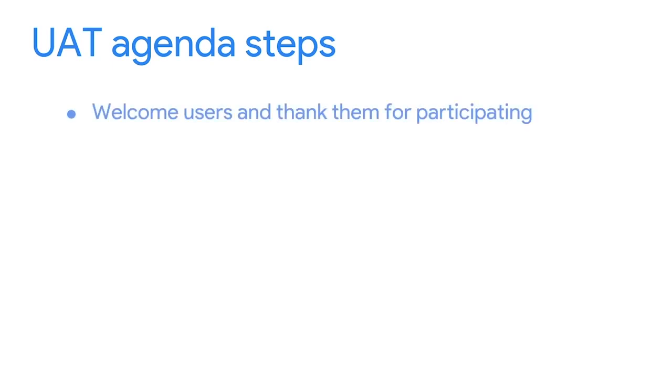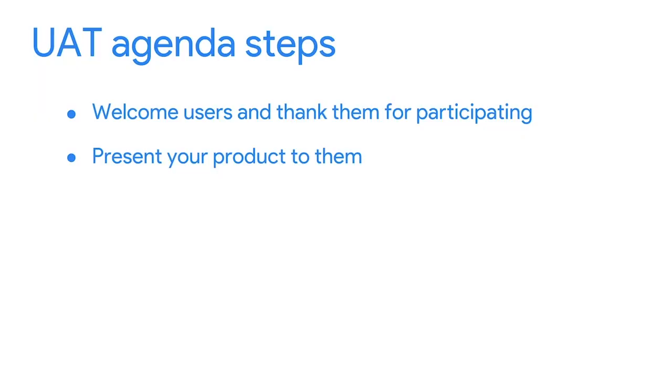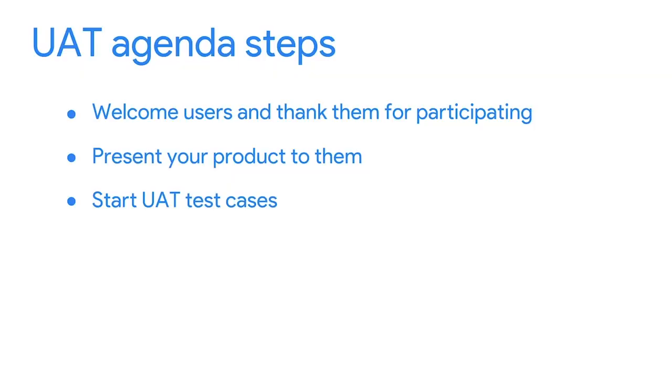In a typical UAT setting, you'll welcome your users and thank them for participating, then present the product to them — discussing testing guidelines and demonstrating how the product works. Next, you'll start your UAT test cases, taking your audience through critical user journeys. A critical user journey is the sequence of steps a user follows to accomplish tasks in your product. When presenting something you've built, you must give users a visual representation or mock-up of your product, or have them go through a demo — such as 3D models, digital blueprints, or samples. Your UAT demo should focus on a call to action.